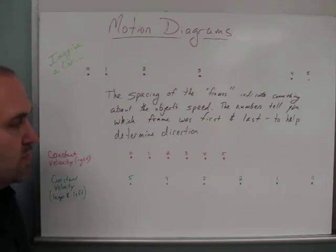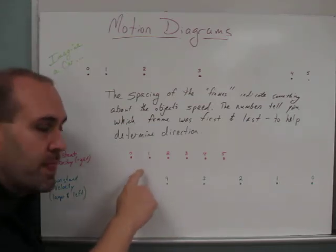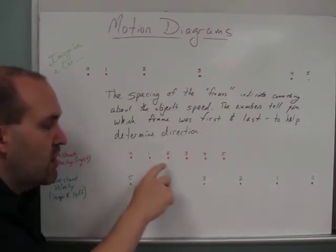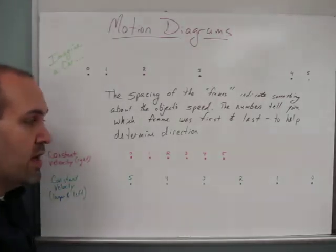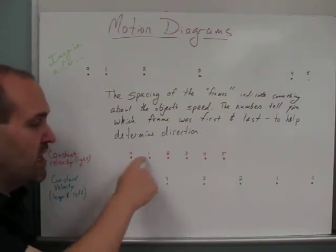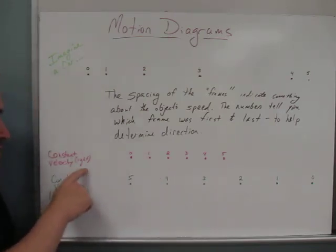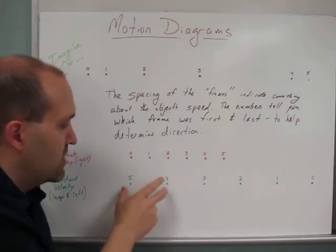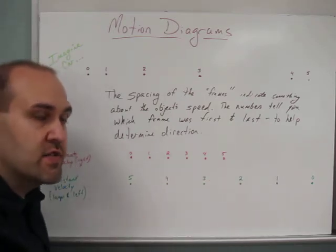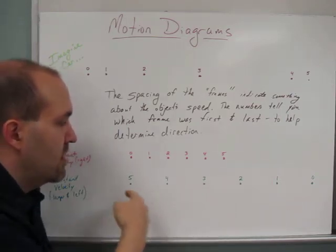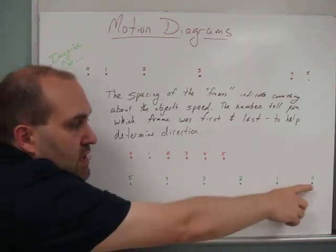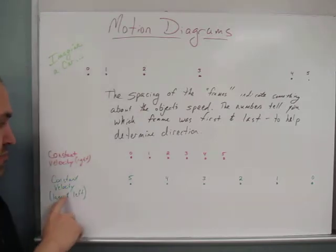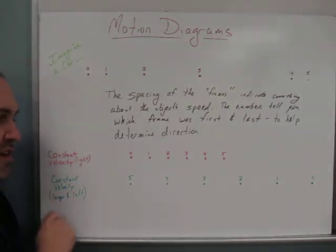Here are a couple of examples of motion diagrams. In the pink one, the frames are equally spaced, which tells you the car went the same speed in each frame — it's moving at a constant velocity to the right. In the blue motion diagram, the spacing is much larger, meaning it's going faster. Also, the numbering is opposite: zero is on the right and five is on the left. So this is a larger constant velocity, moving to the left.